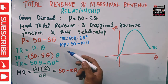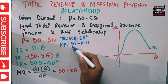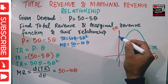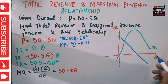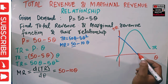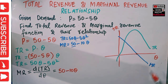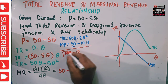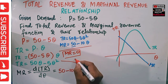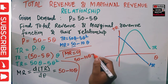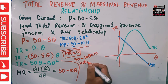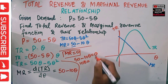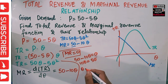If I draw the marginal revenue function, its intercept is 50, so it will be a straight line like this. This is our marginal revenue function — it will cut the quantity axis at some point. When MR = 0, we set 50 - 10Q = 0, which gives 10Q = 50. Dividing both sides by 10, we get Q = 5.